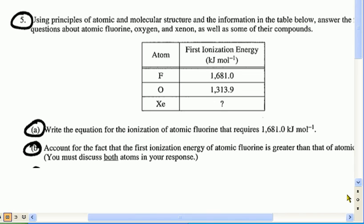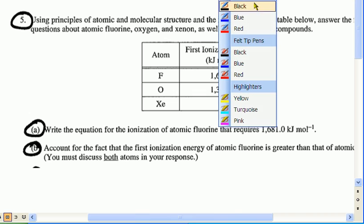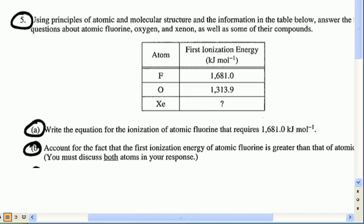Okay guys, time to vodcast the homework solution to 3.3p. We're going to do A and B for that. So we have homework 3.3p. Using the principles of atomic and molecular structure and the information in the table below, answer the questions about atomic fluorine, oxygen, and neon.